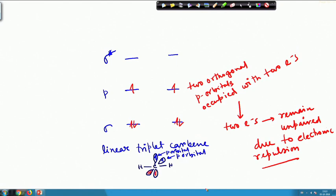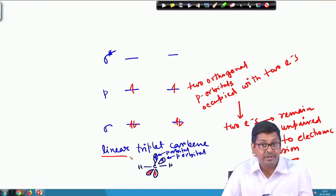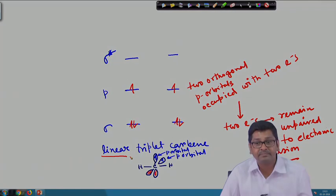So what we have learnt: we have learnt the electronic structure of bent as well as linear triplet carbene. Thank you very much.